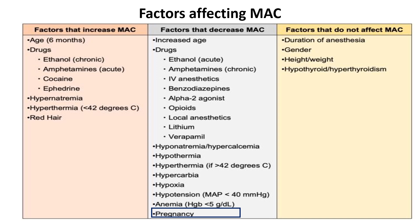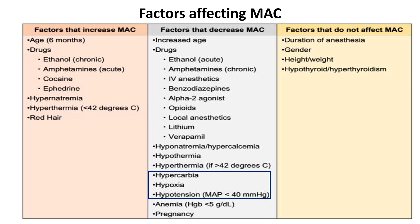Studies show that during early pregnancy, the MAC decreases by approximately 27% to 30% for agents such as halothane and isoflurane. This heightened sensitivity persists throughout pregnancy, with reductions of up to 40% at term, likely due to hormonal changes — particularly elevated progesterone levels. Hypoxia, acidosis, and hypercarbia each reduce the MAC required for inhaled anesthetics. Severe hypoxia can decrease the MAC by approximately 10% to 50%. Similarly, acute metabolic acidosis leads to a reduction in the MAC. Elevated carbon dioxide levels in the blood — hypercarbia — also decrease the MAC, likely due to the central nervous system depressant effects of increased carbon dioxide levels.